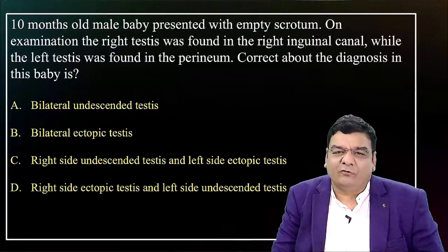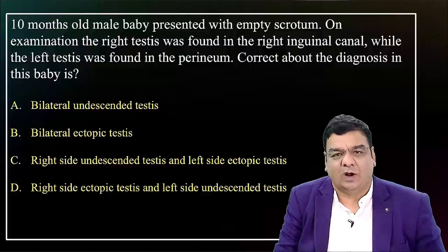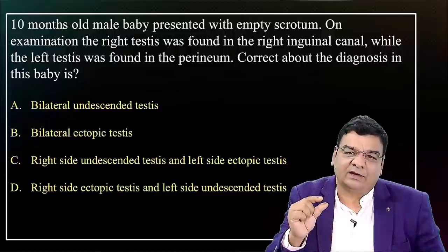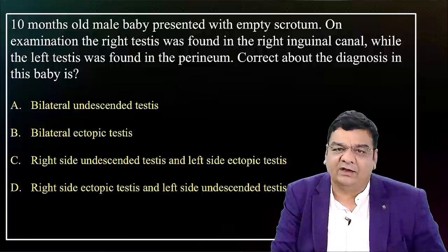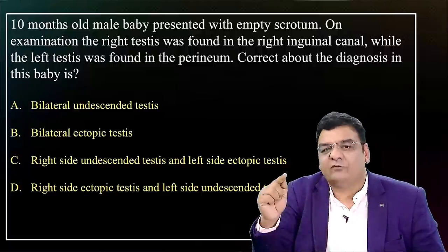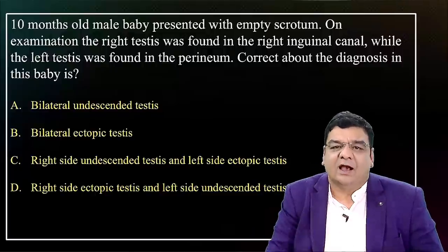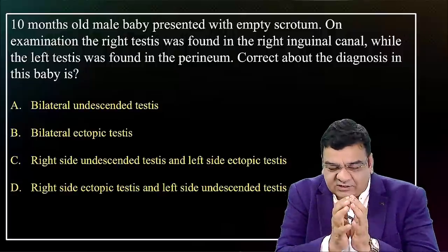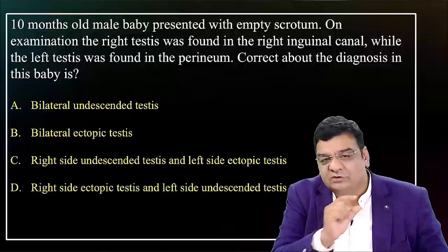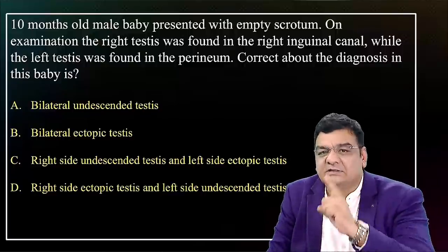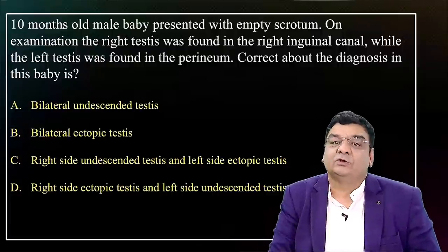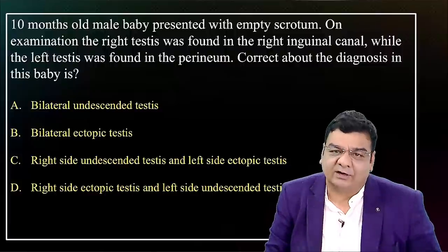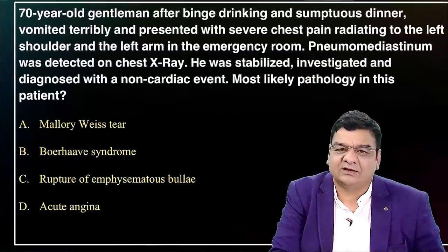Recently, examiners are focusing on the difference between undescended testis and ectopic testis. Undescended testis: arrested anywhere in the normal path of descent — top of scrotum, superficial inguinal ring, inguinal canal, deep inguinal ring, or peritoneal cavity. Ectopic testis: deviates from the normal path of descent and lies elsewhere — root of penis, perineum, superficial inguinal pouch, or femoral canal. Common site of undescended testis is the inguinal canal; ectopic testis is the superficial inguinal pouch. Treatment for undescended testis is orchidopexy at six months of age.